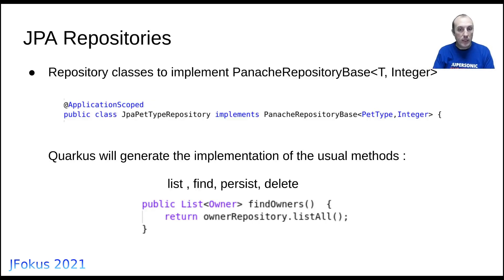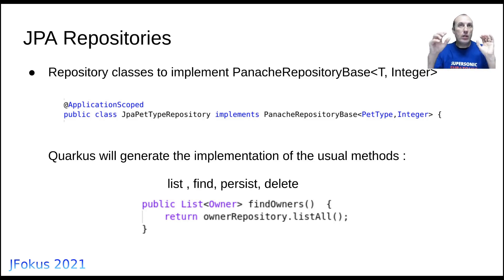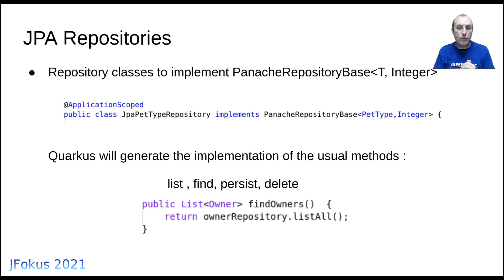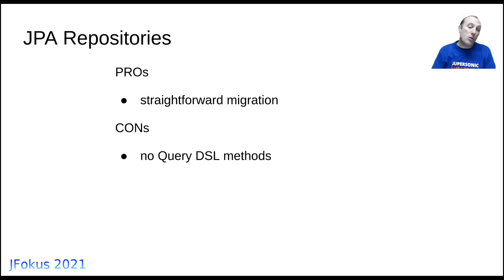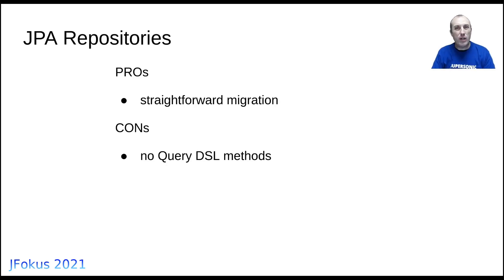For JPA repositories, it's a matter of implementing PanacheRepositoryBase rather than the plain PanacheRepository, because the default identity type in Panache entities is Long, while Spring was using Integer. This avoids changing everything else, and you still get all the usual entity management methods. The one thing missing is query DSL methods like findByNameAndAge — you won't have those, but you can annotate your methods with queries to obtain the same data, which for complex queries is arguably cleaner anyway.